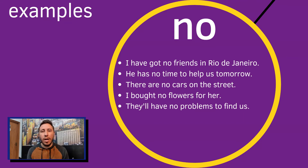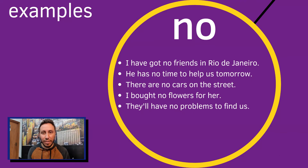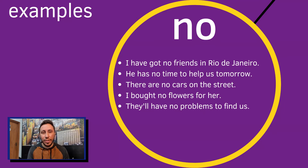The last example: They'll have no problems to find us — eles não terão nenhum problema para nos encontrar. Again, the translation will be in singular form, but the sentence in English is in plural. So basically, to use no, it's very simple — you create your sentence, and the only negative word you are going to see in the sentence is the word no.